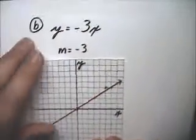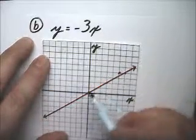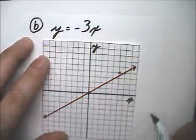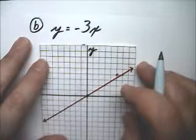So graphing this, the b is 0. The direct variation always goes through the origin.